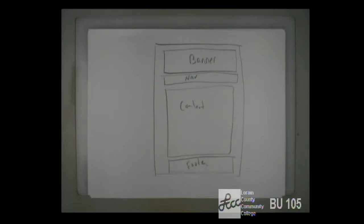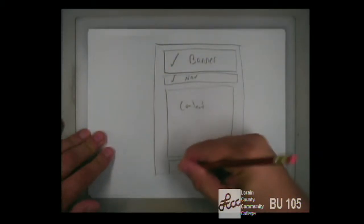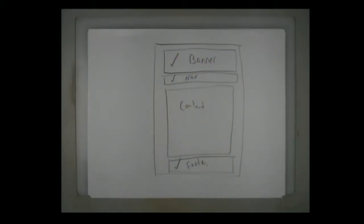These three sections — the banner on top, the footer on the bottom, and the navigation — are going to be the same on each page. Sometimes people think: if I have a navigation, do I show the page that I'm currently on? Normally, yes — show all your pages in the navigation, even the page you're currently on. You can designate the current page several different ways. So let's go and build this.